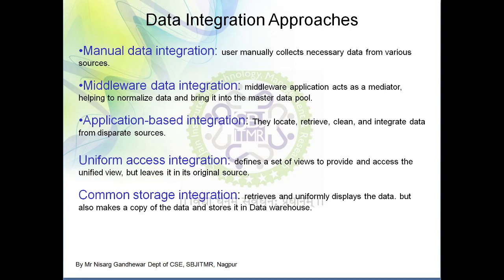Similar to uniform access integration, there is another approach called common storage integration, where you retrieve and uniformly distribute the data. The key difference is that here you make a copy of the data and store it in a data warehouse — a centralized repository. In uniform access integration you do not make a copy; in common storage integration you do.